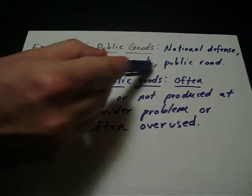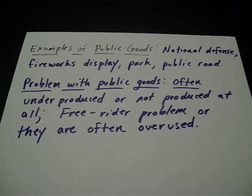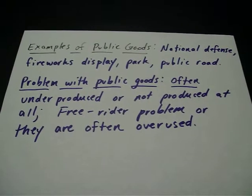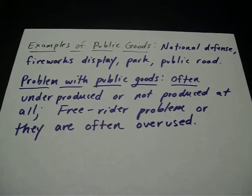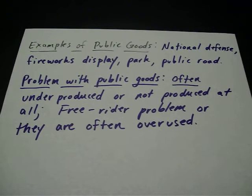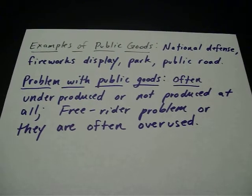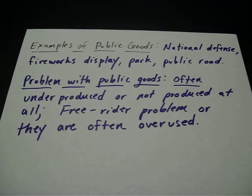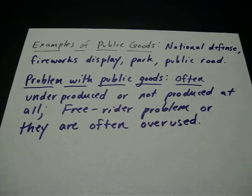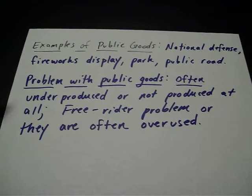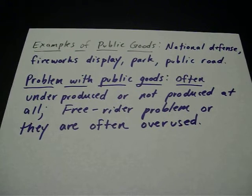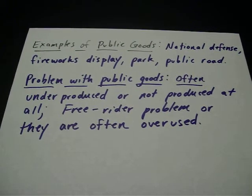A park might not be the best example, and same with a public road — it might not be a perfect example. Because if everyone is using the park, or lots of people are using public roads, it might diminish the enjoyment that you get from it. But they may still be considered public goods, just maybe not the best examples. The problem with public goods is that they're often underproduced, or sometimes not produced at all.